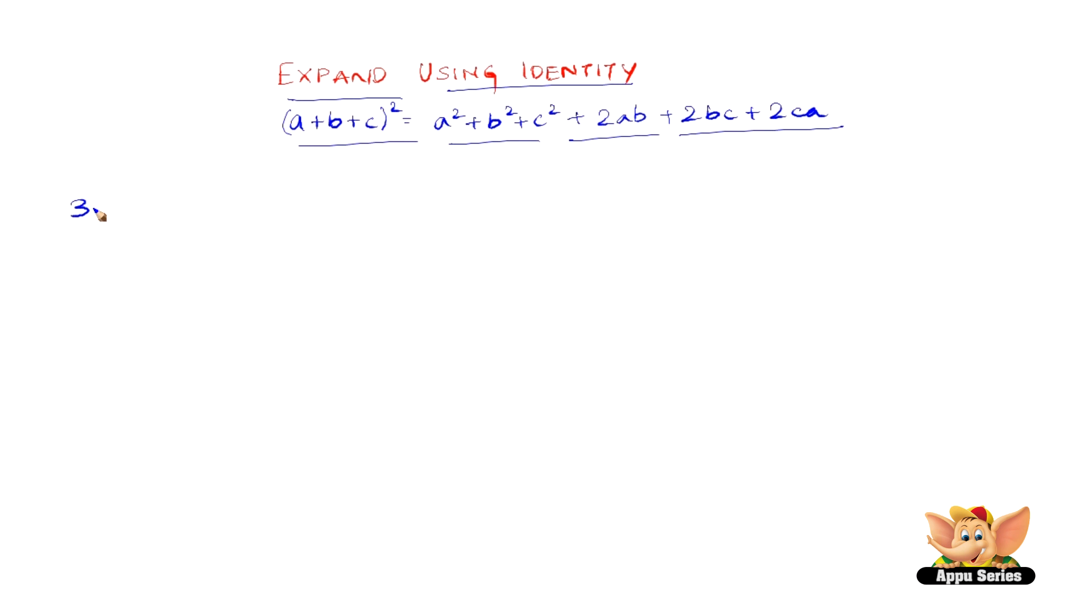Let us consider 3x plus 4y plus 5z the whole square. So here a is 3x, b is 4y, c is 5z. So therefore we have 3x the whole square plus 4y the whole square plus 5z the whole square plus 2 into 3x into 4y plus 2 into 4y into 5z plus 2 into 5z into 3x.